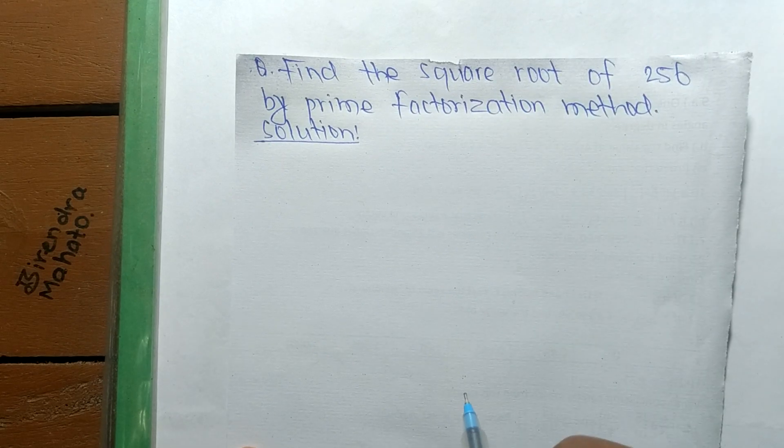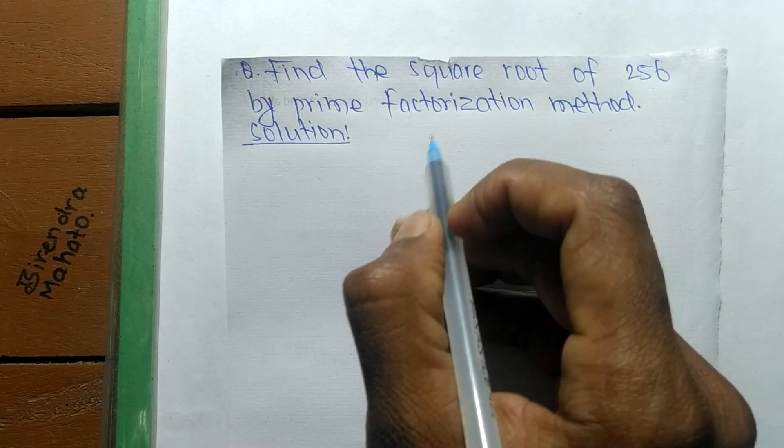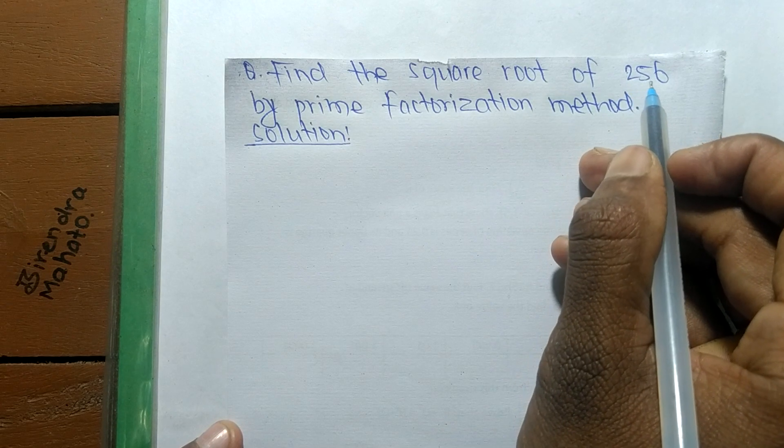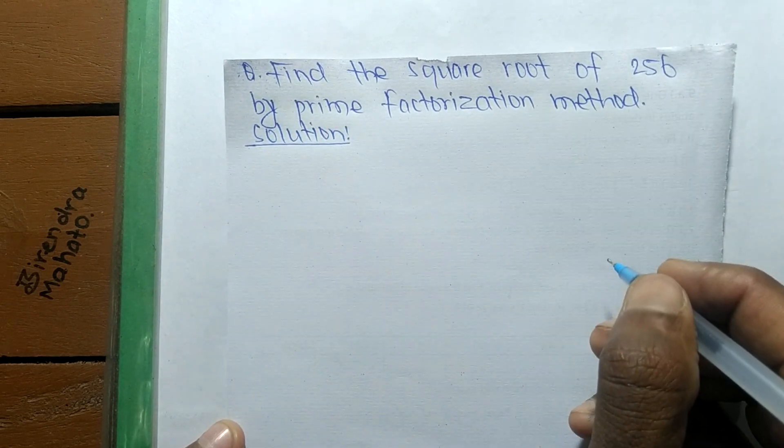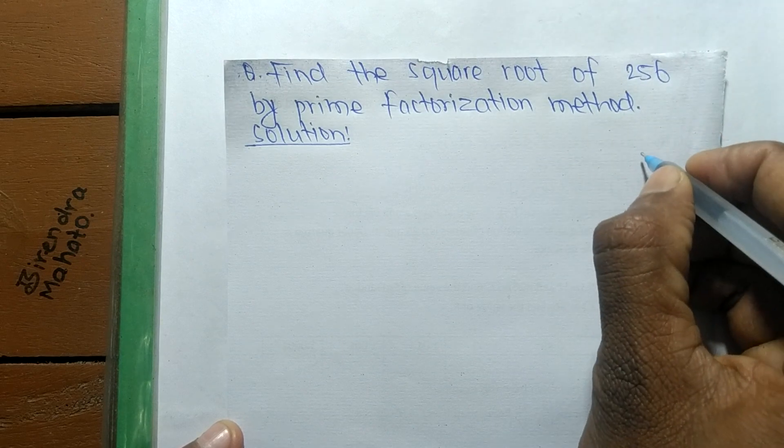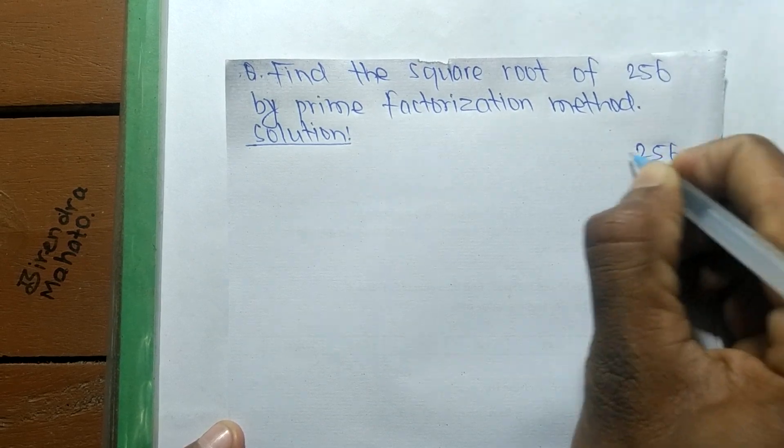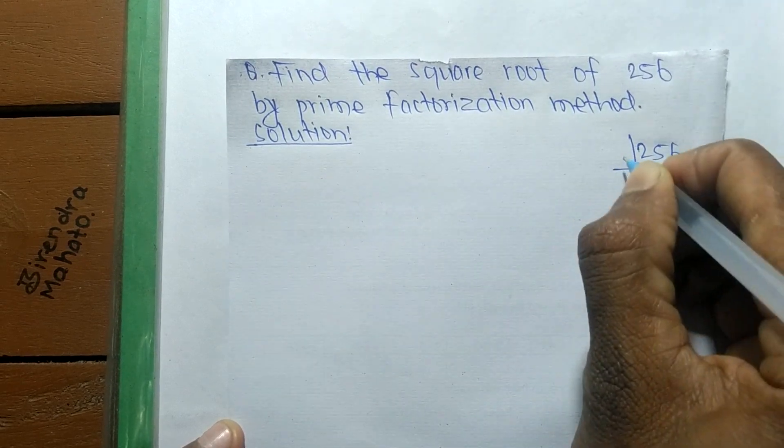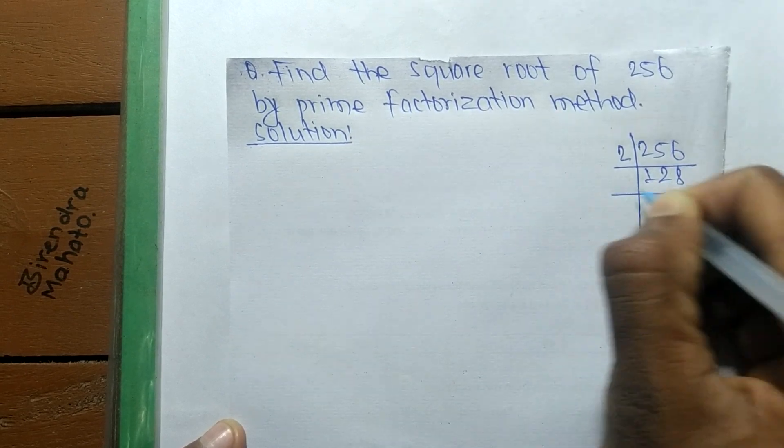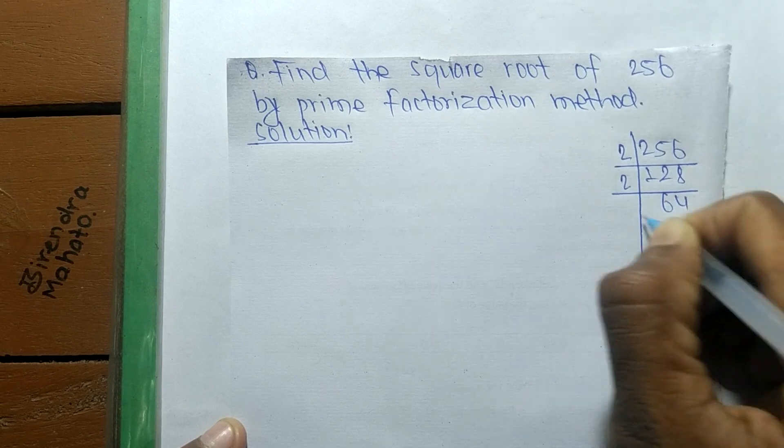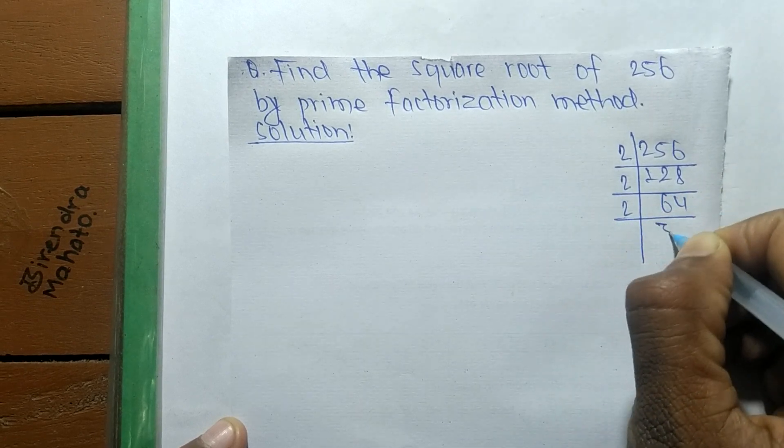Today in this video, we shall learn to find the square root of 256 by prime factorization method. First, we find out the prime factors of 256. So it is 2 times 128, 2 times 64, and 2 times...